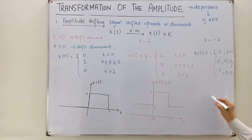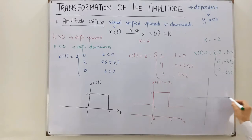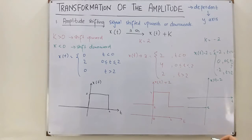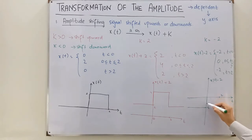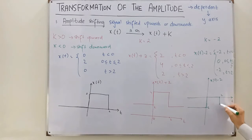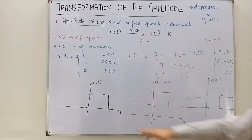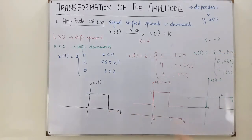Drawing x(t) − 2: it is −2 for t less than 0, then 0 for t between 0 and 2, and −2 again after t = 2. The same signal, when amplitude-shifted with a positive k, shifts upward; with a negative k, it shifts downward. That covers amplitude shifting.